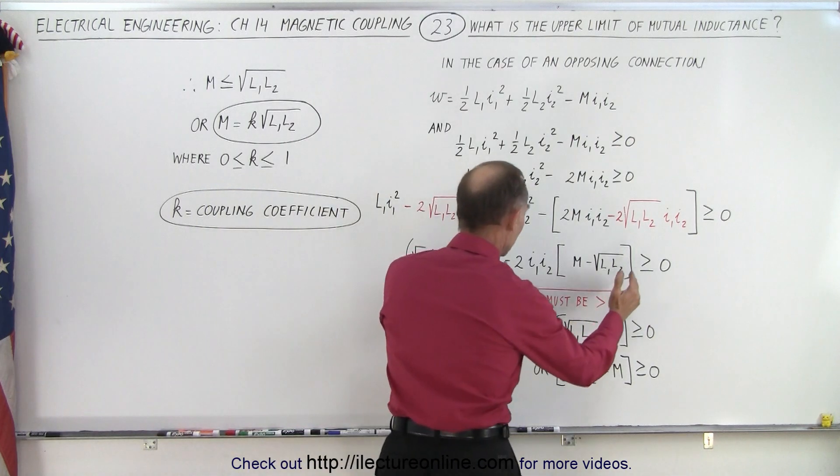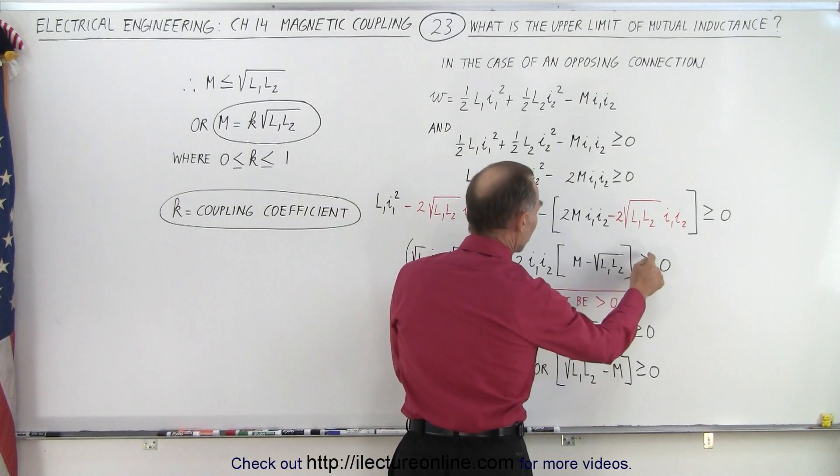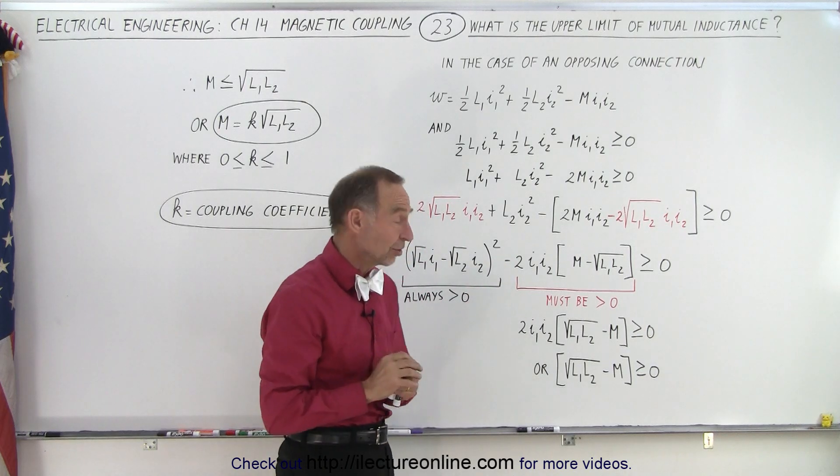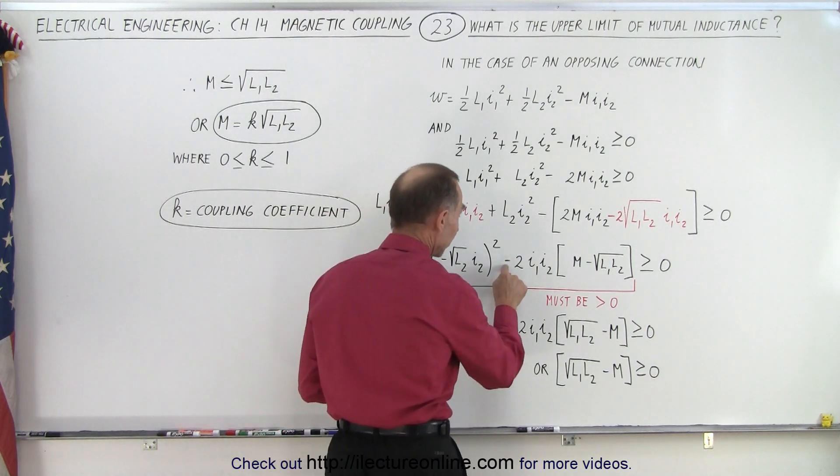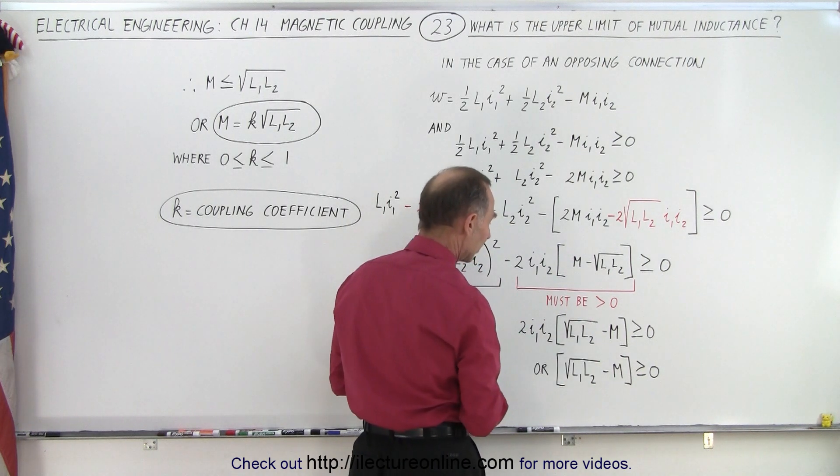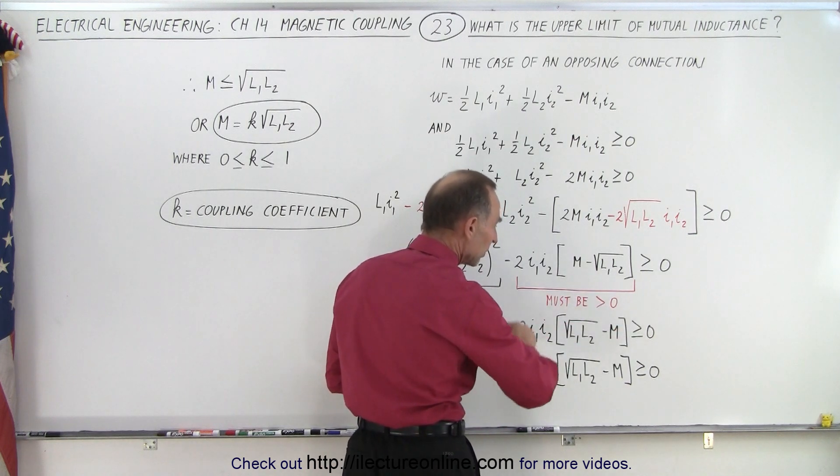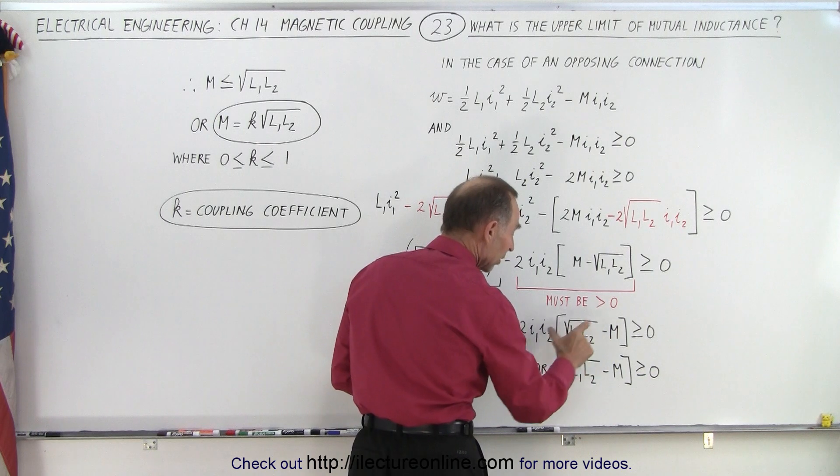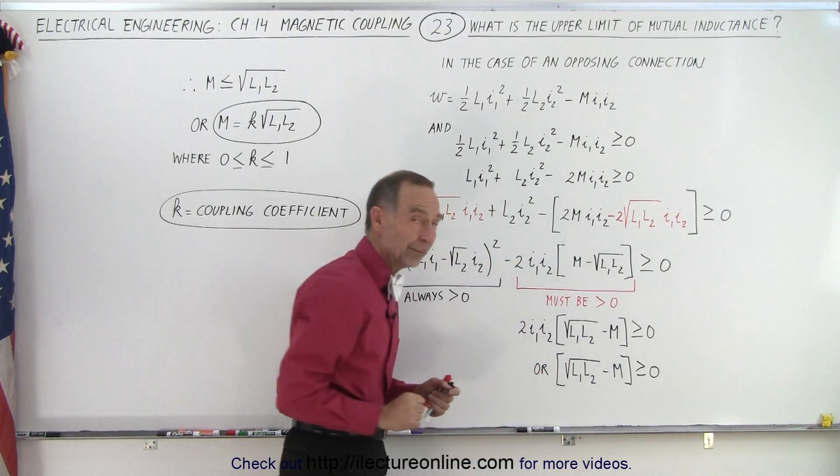That means that the remaining term right here must be greater than or equal to zero. Now this negative in front is a little bit bothersome, so what we're going to do is multiply that times what's inside the brackets. We're going to turn these two around so now we got rid of the negative sign, and what we can then say is for this whole thing to be greater than or equal to zero, what's inside the bracket must be greater than or equal to zero.